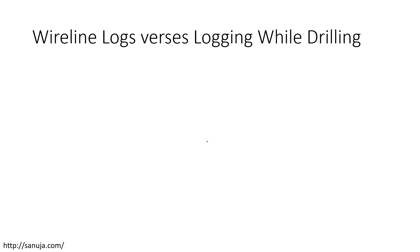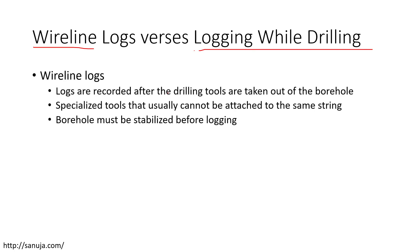There are two methods of producing logs. One is called wireline, and the other is called LWD. For wireline logs, the logs are recorded after the drilling tools are taken out of the borehole. This usually involves specialized tools that cannot be attached to the same string as the drilling one. The borehole must be stabilized before logging information is collected, to prevent borehole collapse during logging.